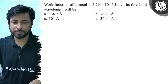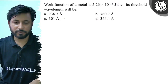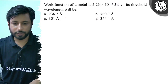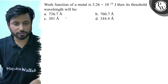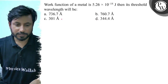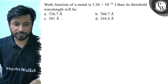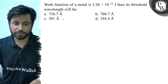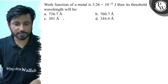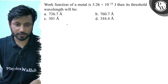Hello, let us see this question. Work function of a metal is 5.26 into 10 to the power minus 18 joules, then its threshold wavelength will be. Option A: 736.7 Angstrom, option B: 760.7 Angstrom, option C: 301 Angstrom, option D: 344.4 Angstrom.